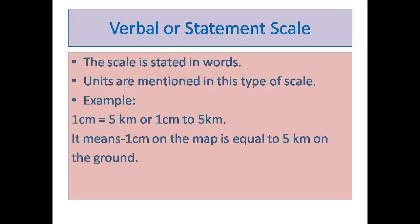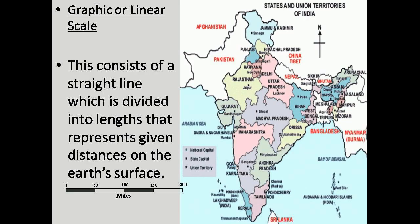Let us talk about verbal or statement scale first. The scale is stated in words and the units are usually mentioned. For example, 1 centimeter is equal to 5 kilometers. It means that 1 centimeter on the map is equal to 5 kilometers on the ground. These are statements indicating what a particular distance on the map would represent on the ground.